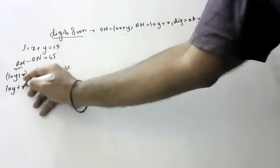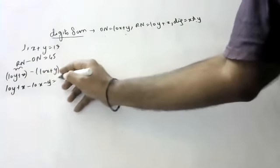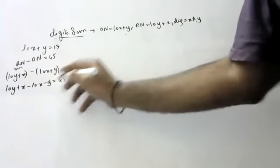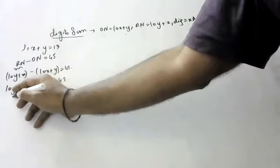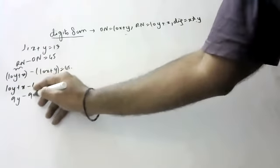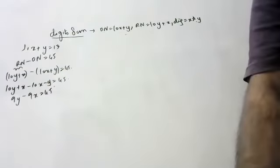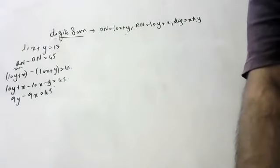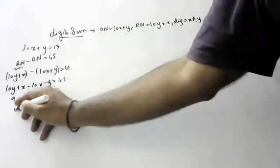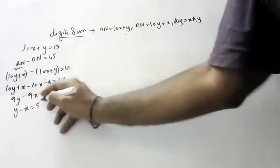10Y minus 10X minus Y is equal to 45, which gives 9Y minus 9X is equal to 45. Taking 9 as common, Y minus X is equal to 5.